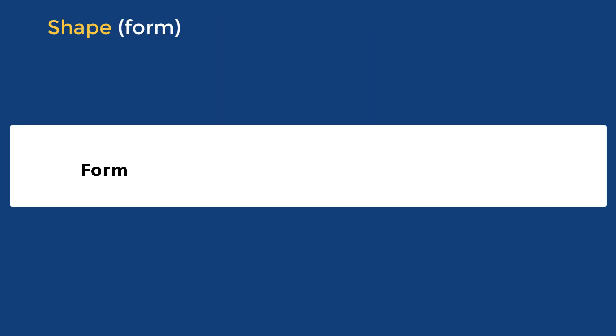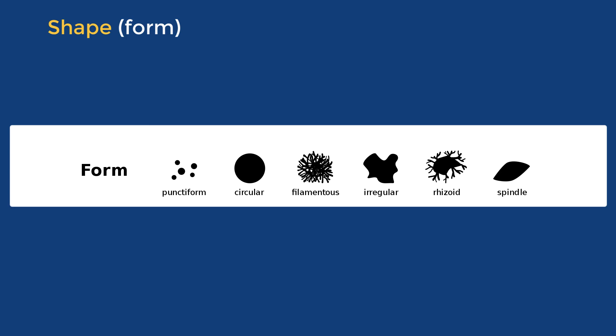Now shape or form. Some bacteria form tiny colonies called punctiform. Round colonies are called circular. Colonies with a stringy appearance are called filamentous. Others are irregular in shape. Rhizoid colonies have these root-like structures sticking out from them and others are spindle-shaped.